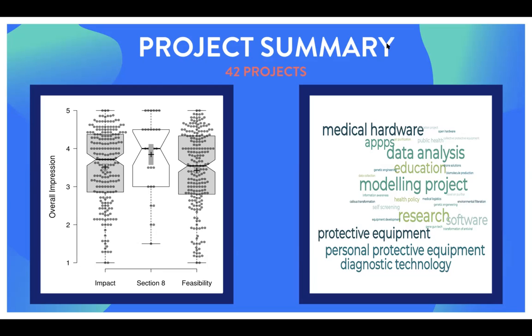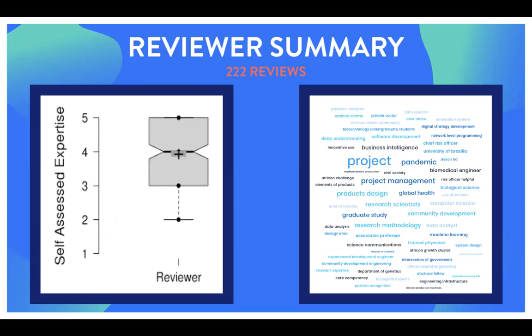On the right-hand side you can see what reviewers marked their projects to be: medical hardware, data analysis, apps, protective equipment, diagnostics, self-screening, genetic engineering — lots of really cool categories. There were 222 reviews total. Everyone did well above the amount of reviews required. And thank you everyone for working hard to sort out the booking problem halfway through and ensuring everyone was reviewed fairly. This open peer reviewing process can exist because you're willing to take part in it — and we're showing it works.